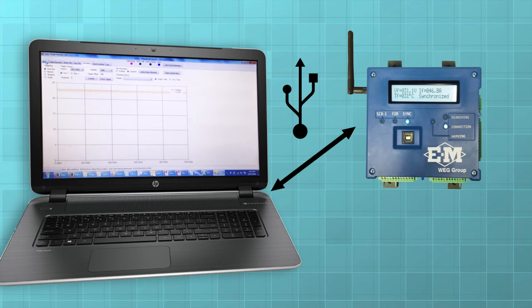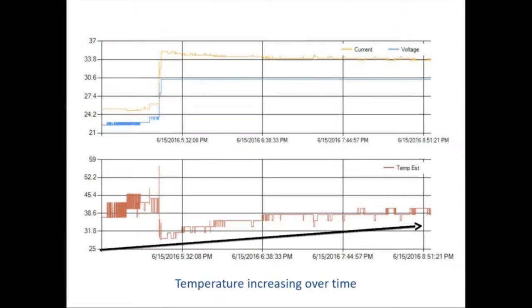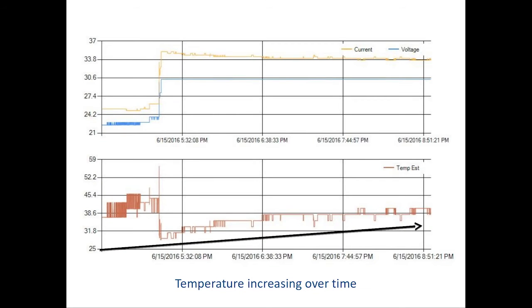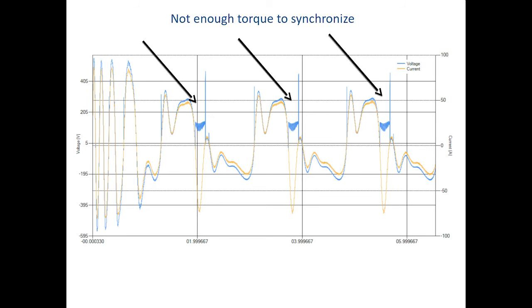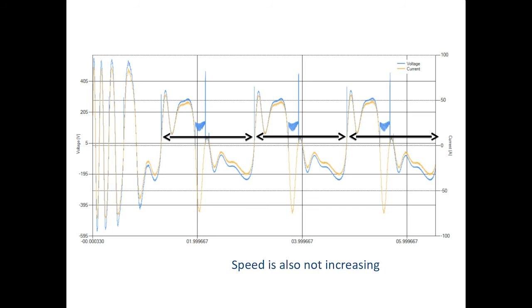By connecting the laptop computer through the USB connection on the display, you can see and record a number of motor functions. In this case, we are monitoring the rotor temperature over time. This data can be used to protect the main field windings. On this screen, we are viewing loading problems.